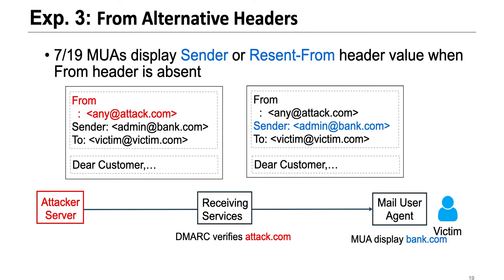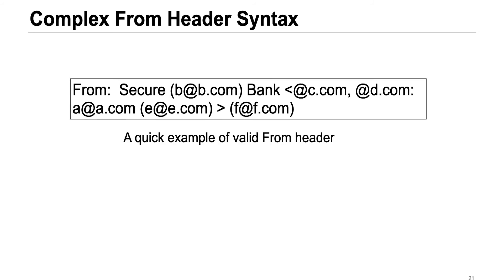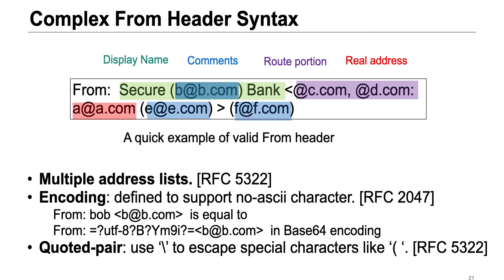Another example involves alternative headers. Normally only the from header is used for email authentication and display. But if an attacker creates a message with no from header or an unrecognized from header, some email clients will display the sender or resent-from header value as the message sender. Even if there is only one header in the message, extracting a consistent email address from it is another challenge because of the complex syntax of from headers. A valid from header can contain a display name, comments in parentheses, route portions, multiple address lists, base-16 encoding, coded pairs, unicode, and other features.